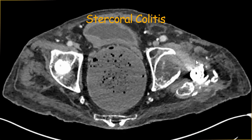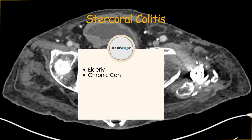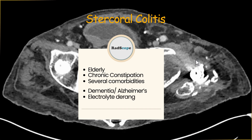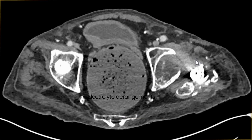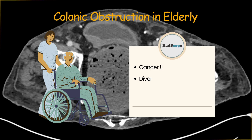Stercoral colitis is mainly seen in elderly patients and those with coexisting comorbidities like chronic constipation, dementia, Alzheimer's disease, and electrolyte imbalances — all of which slow bowel movement. As fecal matter passes through the colon with reduced motility, it has more chance to desiccate due to continuous water absorption, resulting in hardened stool that is difficult to evacuate. In elderly patients presenting with bowel obstruction, think first of cancer, then diverticulitis or volvulus, but stercoral colitis from fecal impaction is also a very likely possibility in those with abundant comorbidities and chronic constipation.